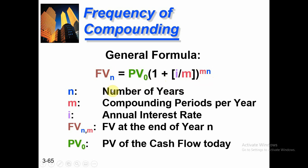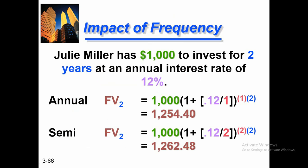Here is the problem: Julie Miller has $1,000 to invest for two years at an annual interest rate of 12%. With the help of this illustration we can understand the concept of compounding very well. Julie Miller is depositing $1,000 for two years at an annual interest rate of 12%.